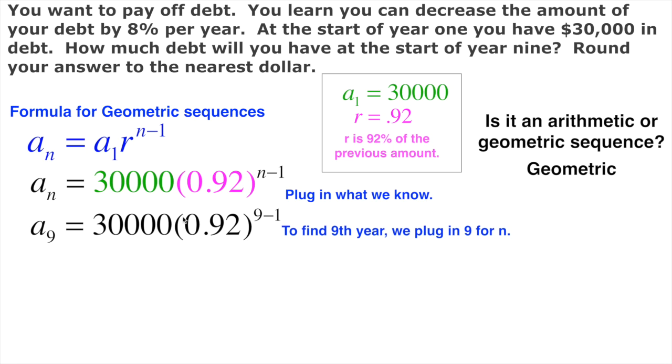I plug it in here and I plug it in here. If you wanted to, you could just plug this right hand side here into your calculator, that's fine. That would work just perfect for you. If you want to do it by hand, that's fine too. 9 minus 1 is 8. I have to take 0.92 and raise that to the 8th power.